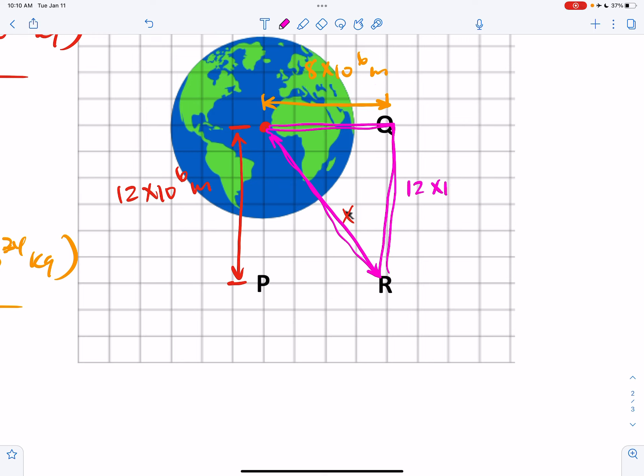And the way that I can write that out would be like this. So the distance to P squared plus the distance to Q squared would be equal to the distance to R squared. The distance to P is 12 million meters. The distance to Q is 8 million meters.